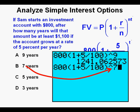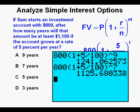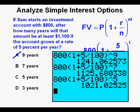Next we try out 7 years in the formula. Press enter. This time we get about $1,126 which is also over $1,100 and is a better answer than 9 years, so we can cross off answer A. Just to be sure we try out 5 years, we get about $1,021. It's not enough so we cross off answer C. And we circle our best answer, our correct answer, B.